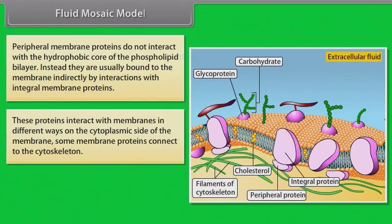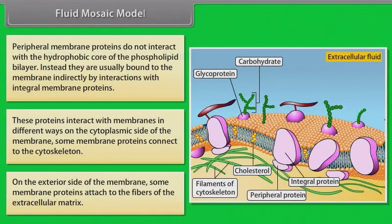These proteins interact with membranes in different ways. On the cytoplasmic side of the membrane, some membrane proteins connect to the cytoskeleton. On the exterior side, some membrane proteins attach to the fibers of the extracellular matrix.